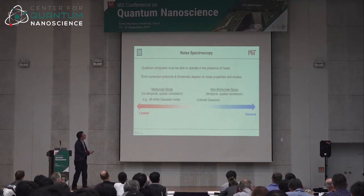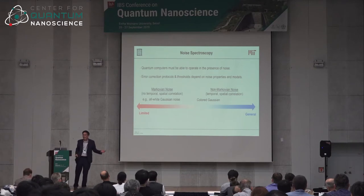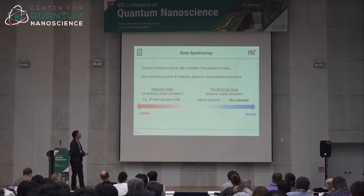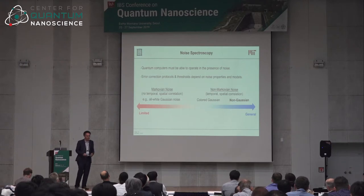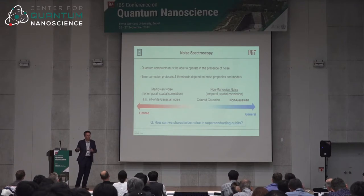There is non-Markovian noise — in fact we have it. We know for a fact that there's 1/f noise in our qubits. The most general type is non-Gaussian noise, involving statistics to all orders. The question is: how do we characterize noise in our systems so we can go back and fix it?